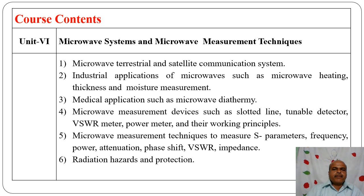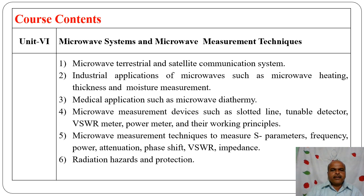Chapter six covers microwave systems and microwave measurement techniques. This includes microwave terrestrial and satellite communication systems, industrial applications such as microwave heating, thickness and moisture measurement, and medical applications such as microwave diathermy. Microwave measurement devices include slotted line, tunable detector, VSWR meter, and power meter and their working principles. In practicals we study and perform experiments on all these components. Measurement techniques cover S-parameters, frequency, power, attenuation, phase shift, VSWR, and impedance measurement, plus radiation hazards and protection. Overall there are six chapters to study in detail.